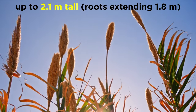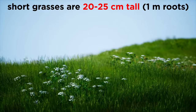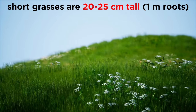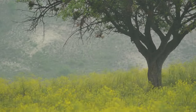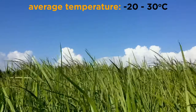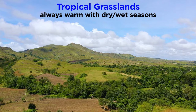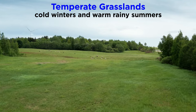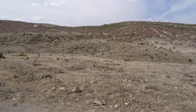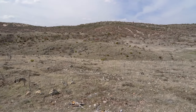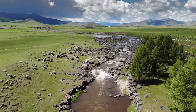Grasses vary in size from 2.1 meters tall with roots extending down 1.8 meters, to short grasses growing only 20 to 25 centimeters tall — these short grasses can have roots that extend one meter deep. The height of grass correlates with the amount of rainfall it receives. Tropical grasslands have dry and wet seasons but remain warm all the time. In contrast, temperate grasslands have cold winters and warm summers with some rain. The grasses die back to their roots annually, while the soil and sod protect the roots and new buds. A few trees may be found in this biome along the streams, but not many due to the lack of rainfall.